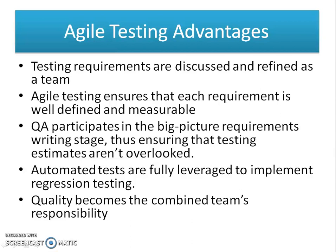The advantages of Agile testing include: testing requirements are discussed and refined as a team. The Agile process often requires having entry and exit criteria for user stories. Agile testing ensures that each requirement is well defined and measurable, allowing QA specialists to determine whether the requirement was actually completed. QA participates in the big-picture requirements stage, ensuring testing estimates aren't overlooked. Automated tests are fully leveraged to implement regression testing. Quality becomes the combined team's responsibility rather than solely that of the testing team.